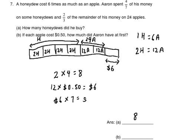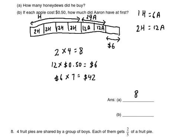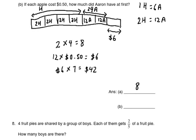There are seven boxes altogether, so $6 multiplied by seven equals $42. Aaron had $42 at first. Please write down the answer and try this on your own at home.